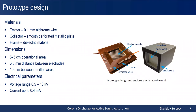In the prototype we built, we used nichrome wire as the emitter electrode, and the collector electrode was built from a stainless steel perforated plate. The electrodes are separated by a dielectric frame with a distance of around 6 mm. The total operating area of the discharge is 5×5 cm. In order to enclose the actuator from one side, we designed an enclosure with a movable backwall to evaluate the effect of different distances to the hardwall behind the actuator. The actuator operates in the voltage range up to 10 kV and can deliver DC currents up to 0.4 mA.